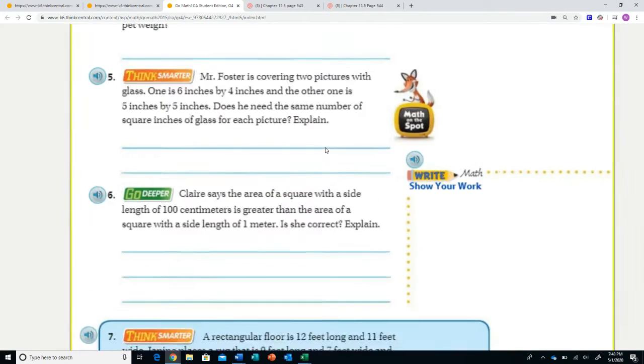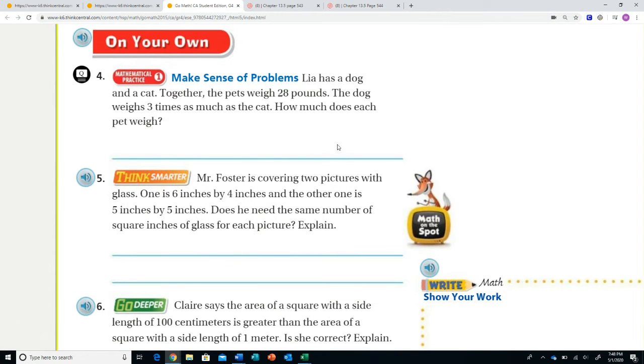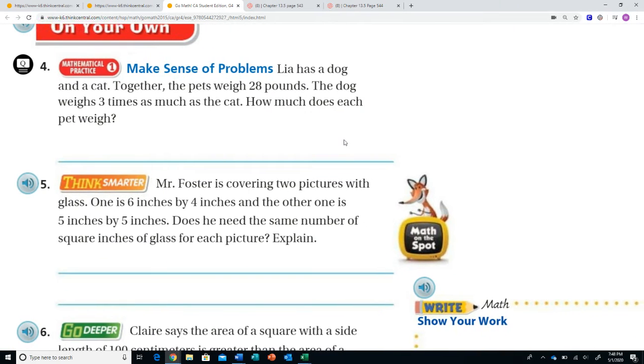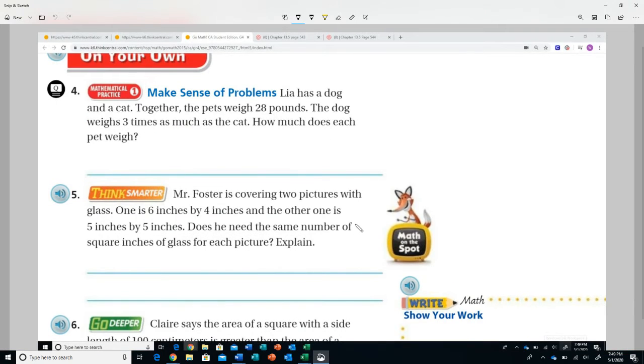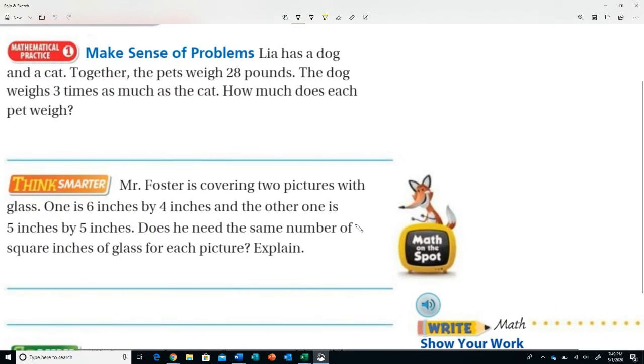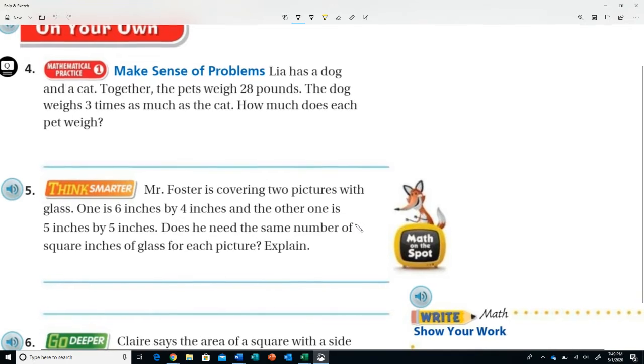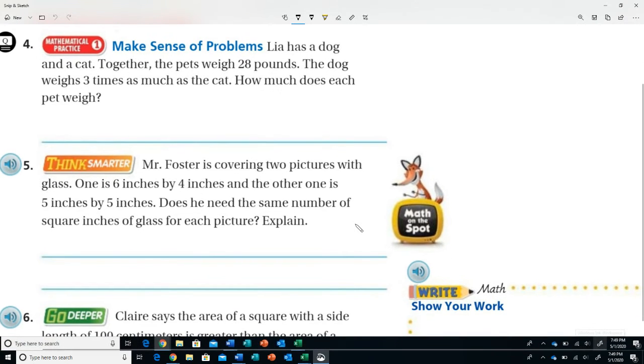Question number four. Leah has a dog and a cat. Together, the pets weigh 28 pounds. The dog weighs three times as much as the cat. How much does each pet weigh? This question seems kind of out of place for this lesson, but it's still one of those things you're asked as a fourth grader quite a bit to do. If you remember doing tape models, this is the type of question that is.